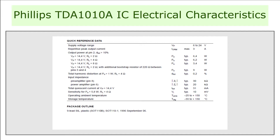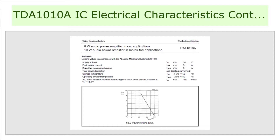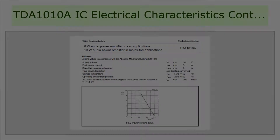The electrical characteristics of the IC are as follows. This IC has a supply voltage range between 6 to 24 volts. The repetitive peak output current is 3 amps. The output power at 14.4 volts on a 4 ohm load is 6.2 watts, and on an 8 ohm load is 3.4 watts. The total harmonic distortion at 1 watt on a 4 ohm load is 0.2 percent. The operating ambient temperature is minus 25 to plus 150 degrees Celsius.